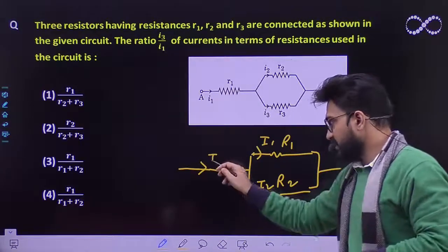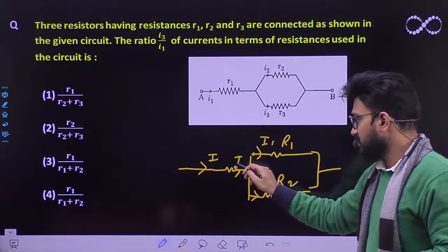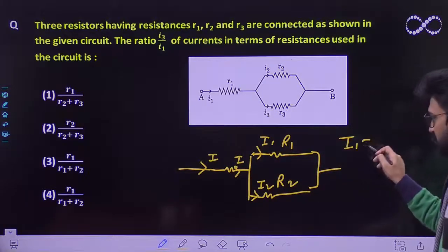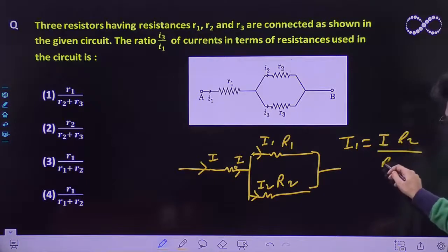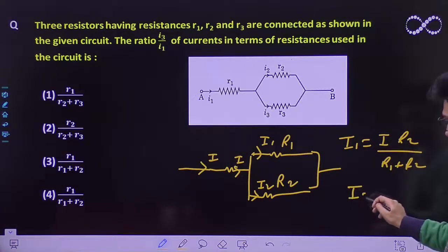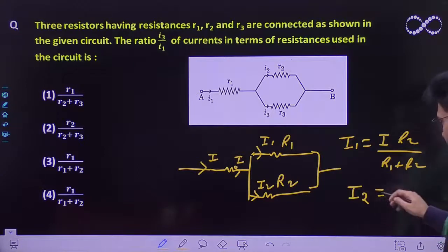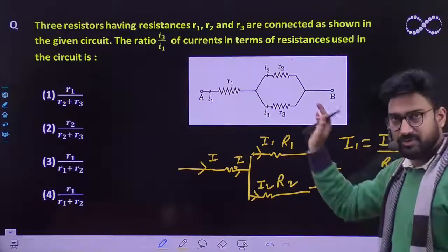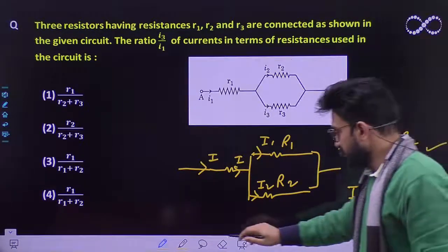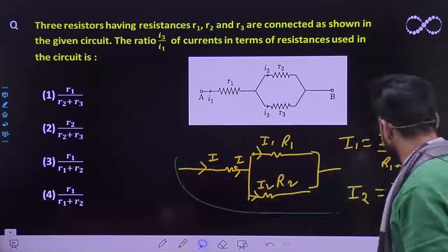We know the relationship: I1 must be equal to I times R2 by R1 plus R2. We are using this current division formula. So I2 must be equal to I times R1 divided by R1 plus R2. These two formulas we already know, and we will be making use of this formula to get the final answer.